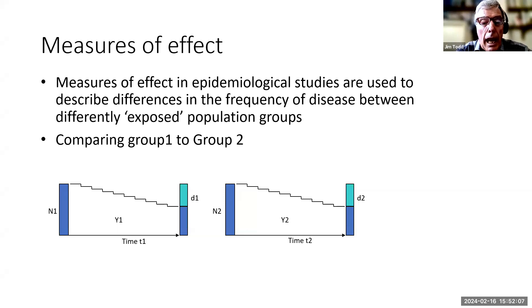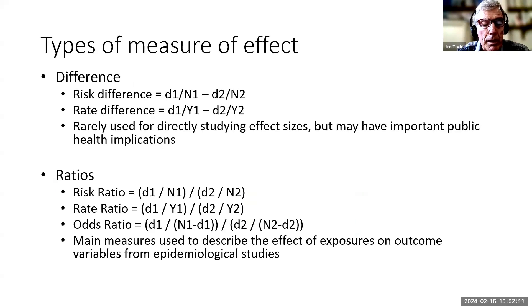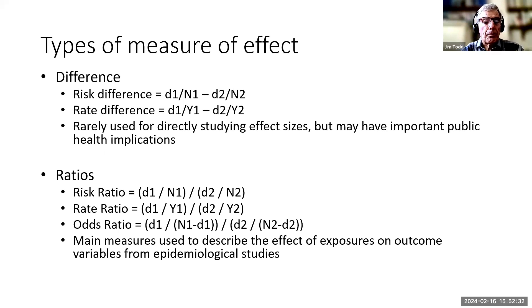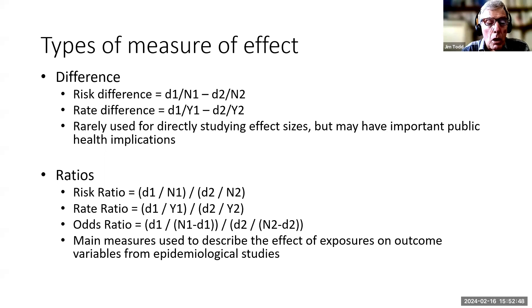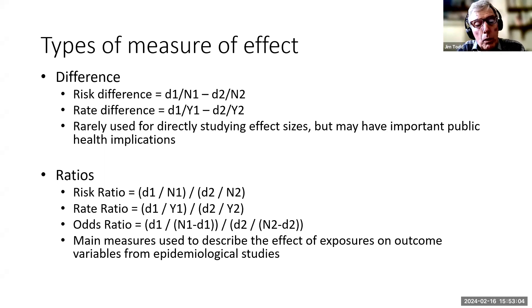However, what we want to do with our analysis is perhaps go further than that and describe the differences more precisely. Here we might describe the risk differences, or the rate differences if we're looking at incidence rates — the incidence rate difference being the rate in one group minus the rate in the other. But differences are often used to describe differences between groups; we don't usually use them in analysis. Often we're going to use ratios. The risk ratio is the number who are positive out of the total population in one group divided by the number who are positive in the second group divided by the total in that population. We're dividing the risk in one group by the risk in the second group.